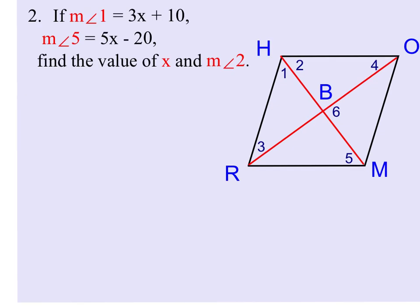In this example, we are given the measure of angle 1 is 3x plus 10, and the measure of angle 5 is 5x minus 20. So the first thing we need to do is find the value of x.